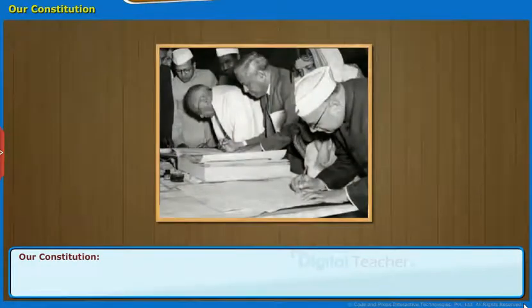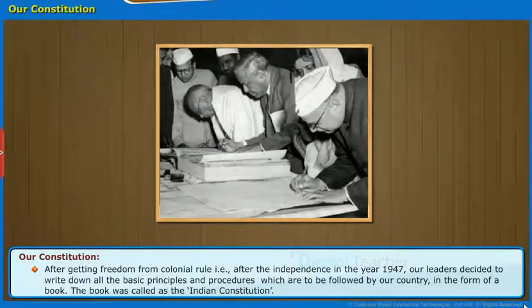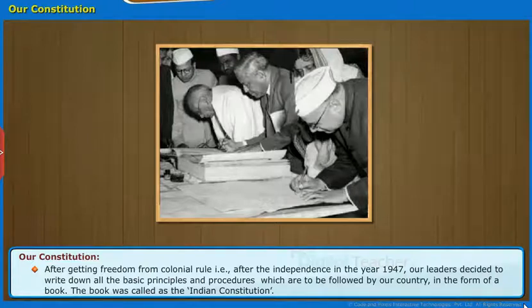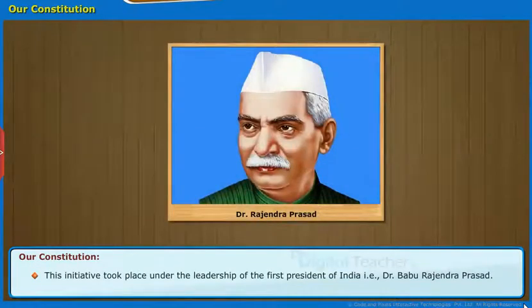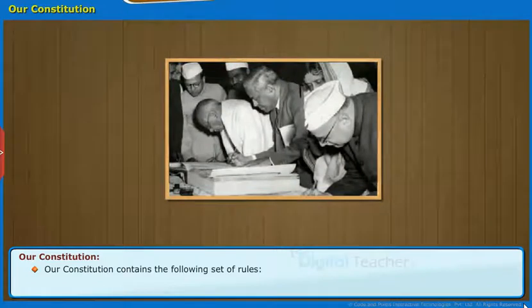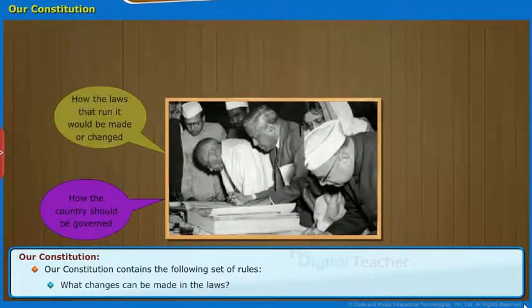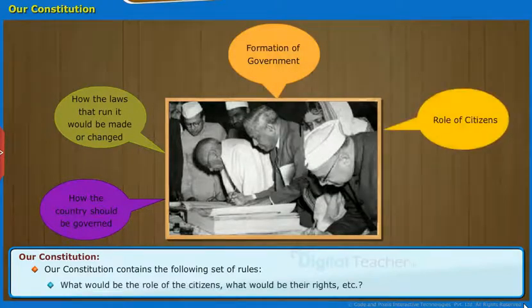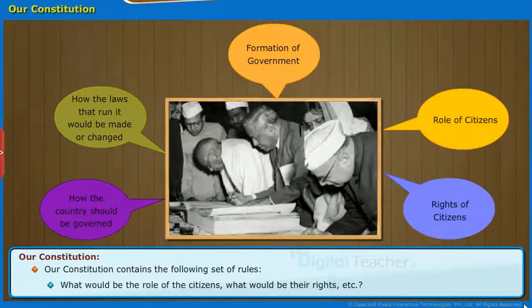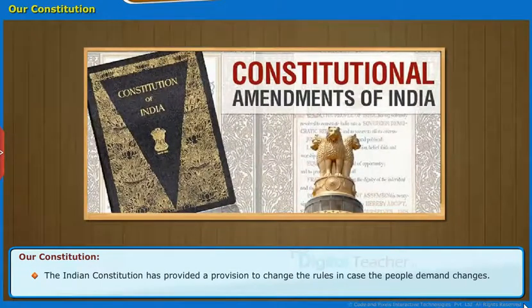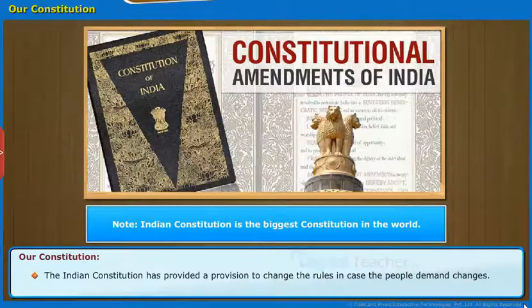Let us now go through the topic, Our Constitution. After getting freedom from colonial rule, that is after the independence in the year 1947, our leaders decided to write down all the basic principles and procedures which ought to be followed by our country in the form of a book. The book was called the Indian Constitution. This initiative took place under the leadership of the first President of India, that is Dr. Babu Rajendra Prasad. Note: Indian Constitution is the biggest constitution in the world.